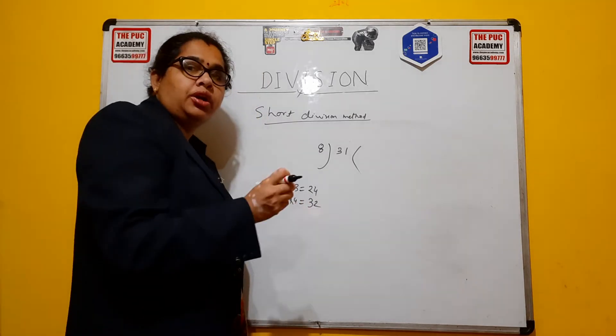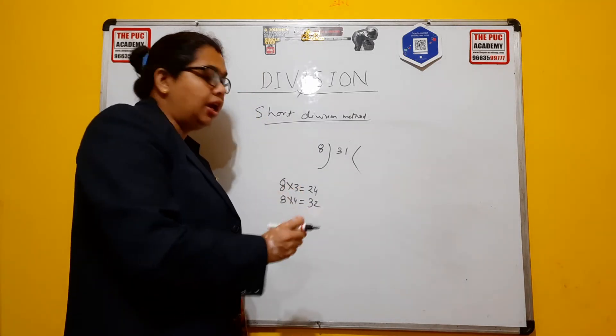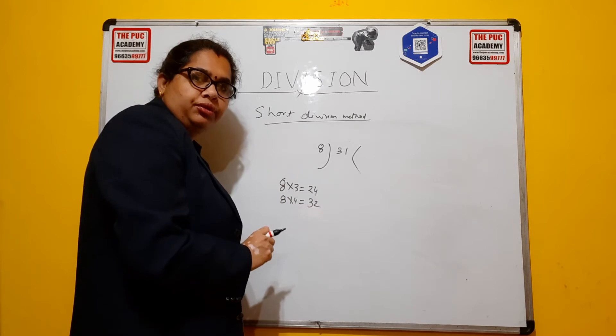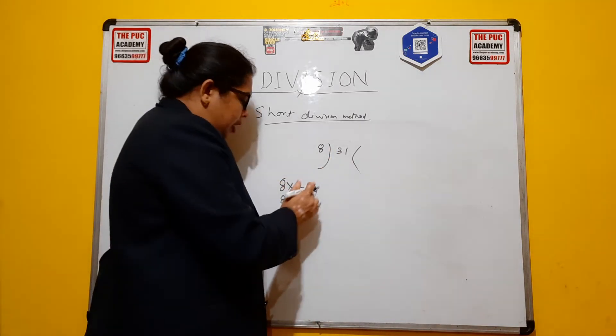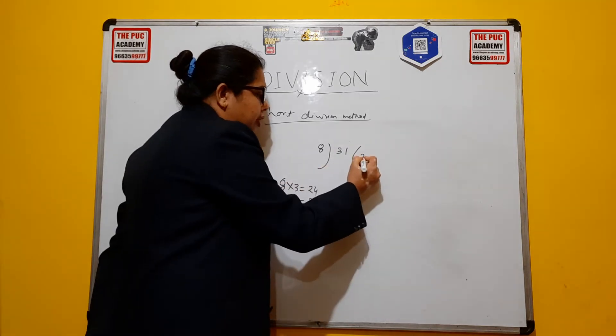So children, we cannot take a big number. We have to take the smaller number, which is smaller than this. It should not be bigger than this. So we consider here 8 into 3 equals 24.